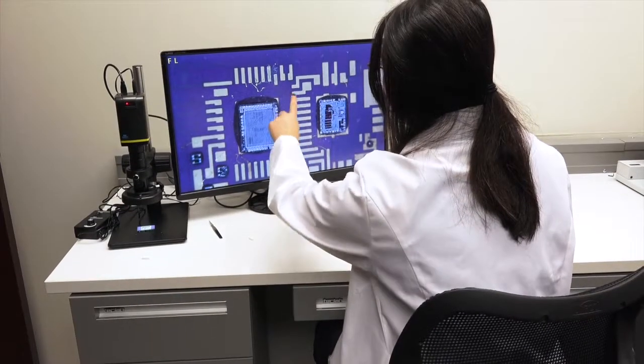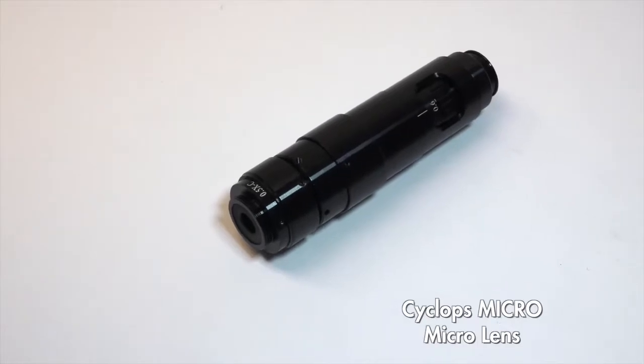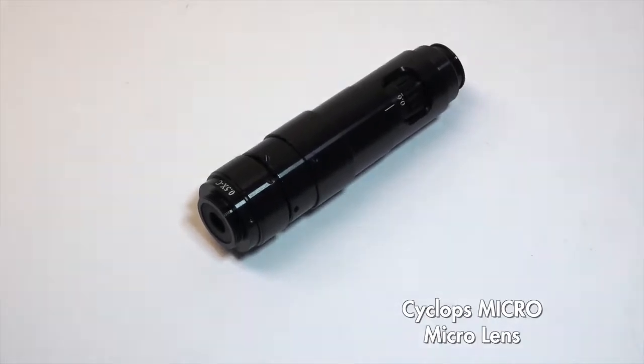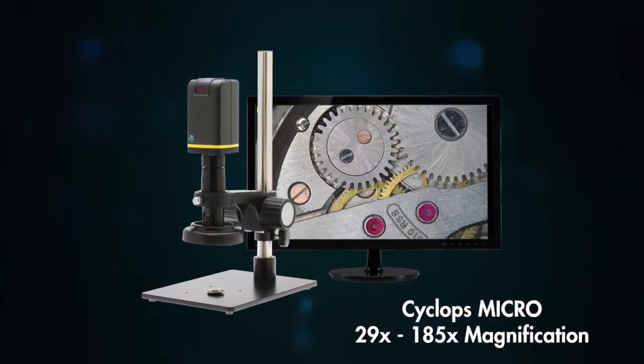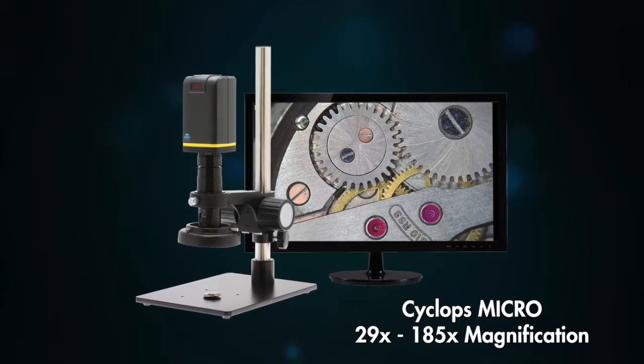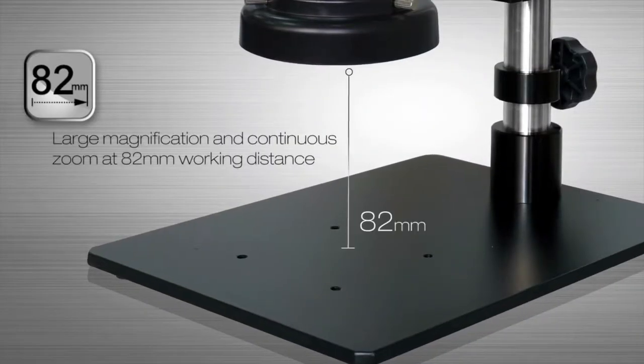For applications that require a closer look, the Cyclops Micro system includes an optical micro lens offering a magnification range of 29x to 185x at a working distance of 82mm.